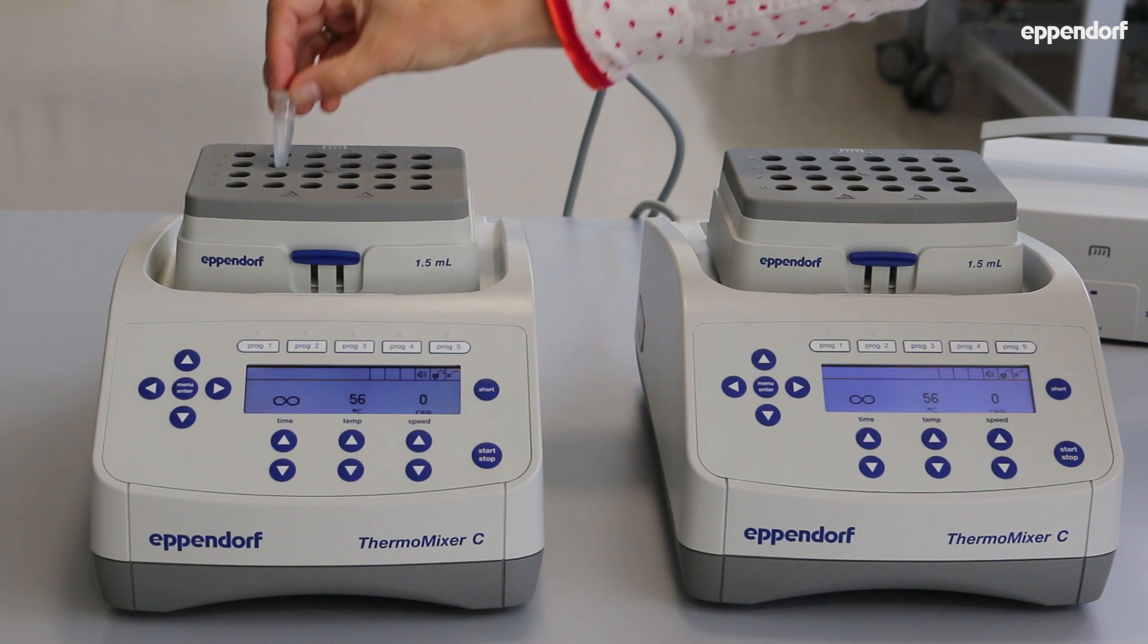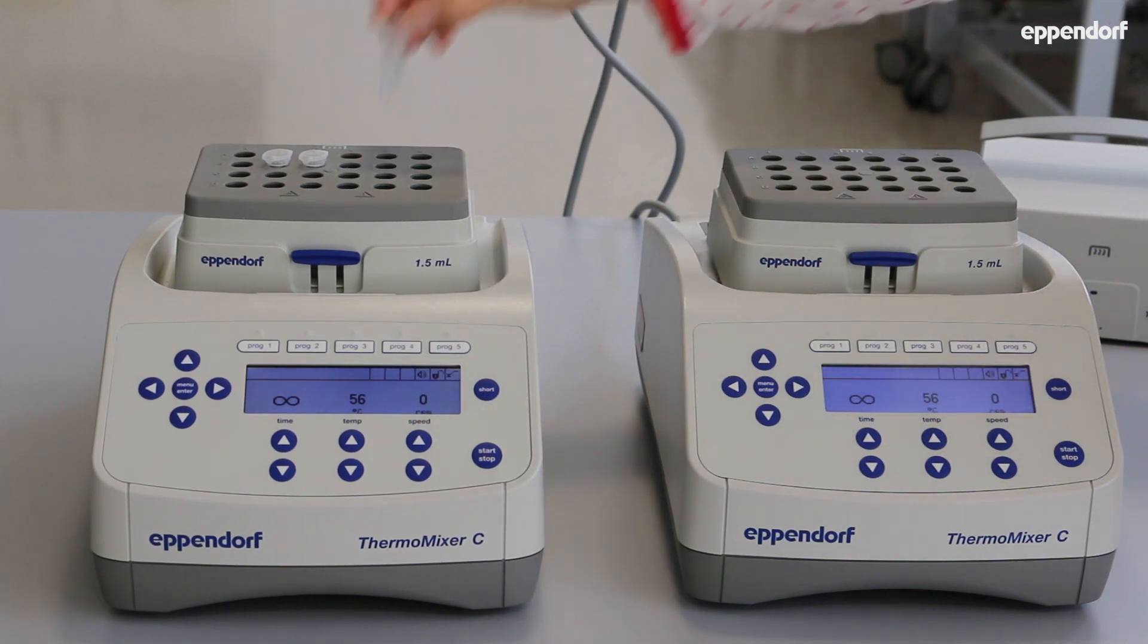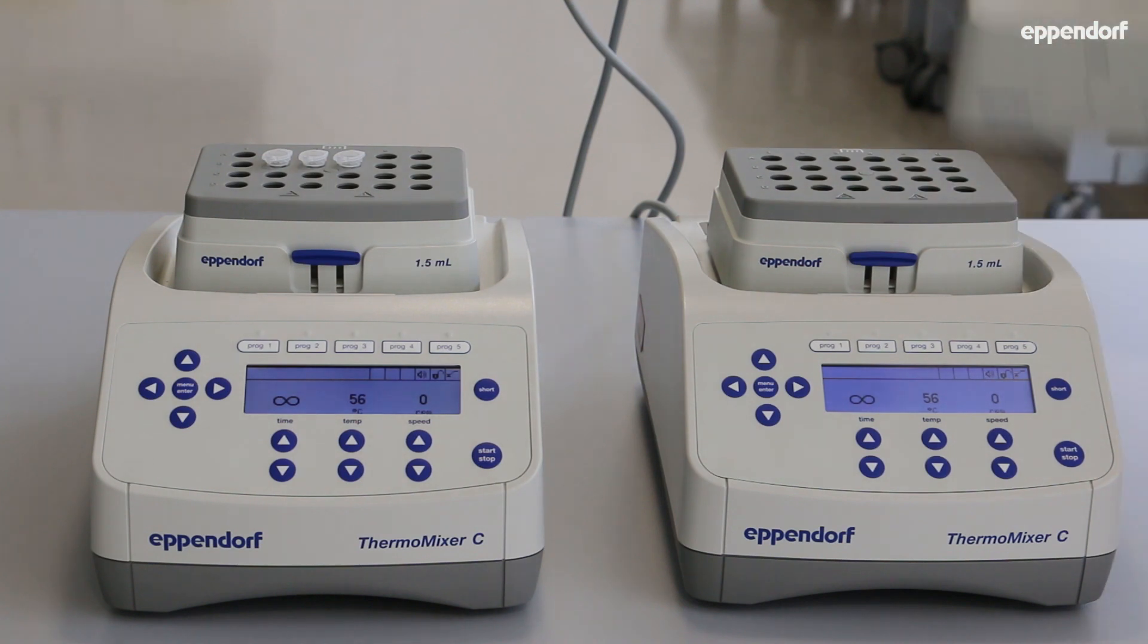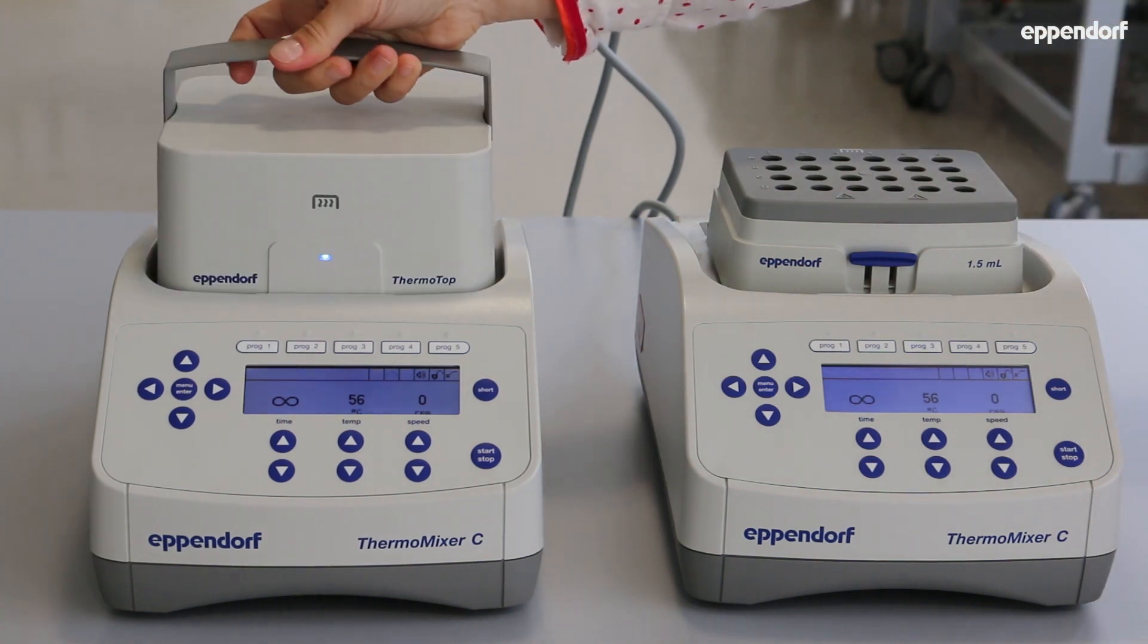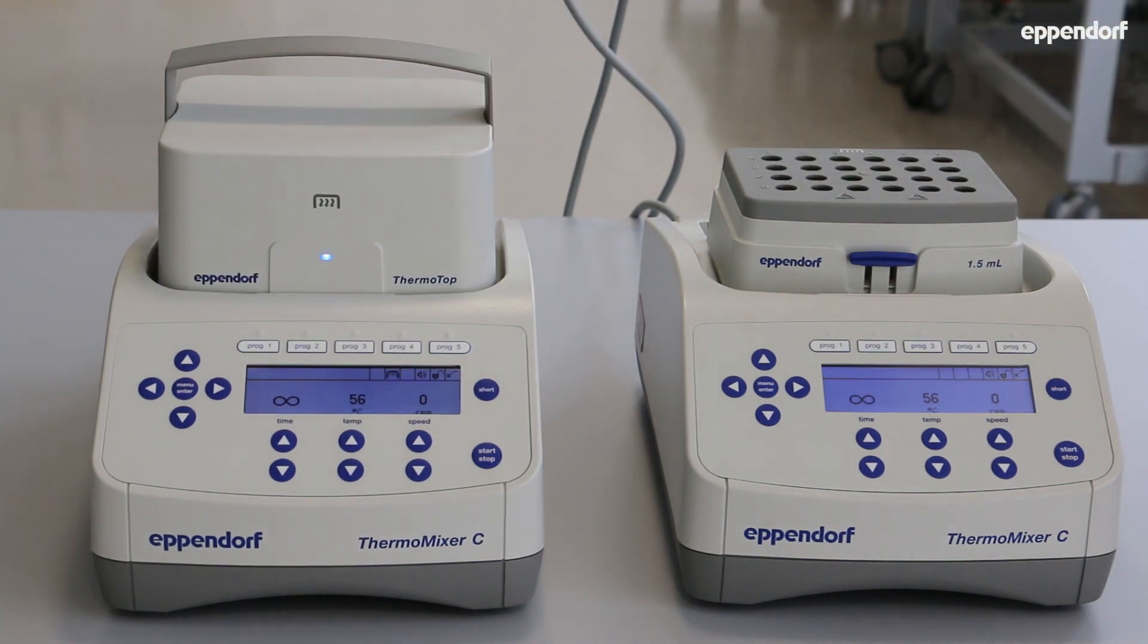To demonstrate the functionality of the Eppendorf thermotop, we filled 1.5 milliliter safe-lock tubes with 1 milliliter of water and heated them up to 56 degrees centigrade, with and without the thermotop.